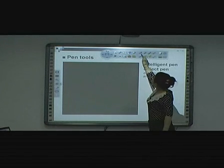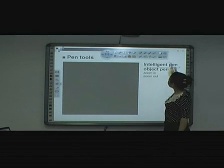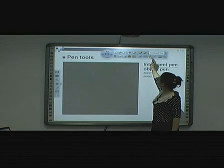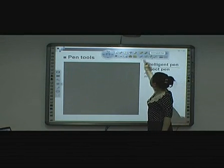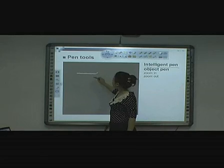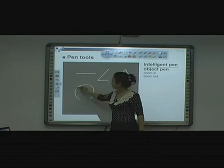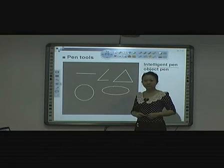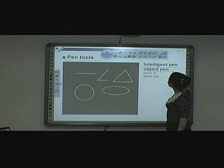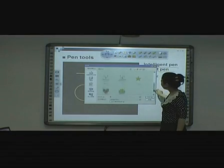Intelligent pencil and object pencil. The software can intelligently identify the shape of the pen brush to standard basic figure such as line, angle, triangle and circle. You can also freely activate the picture in the object pencil.